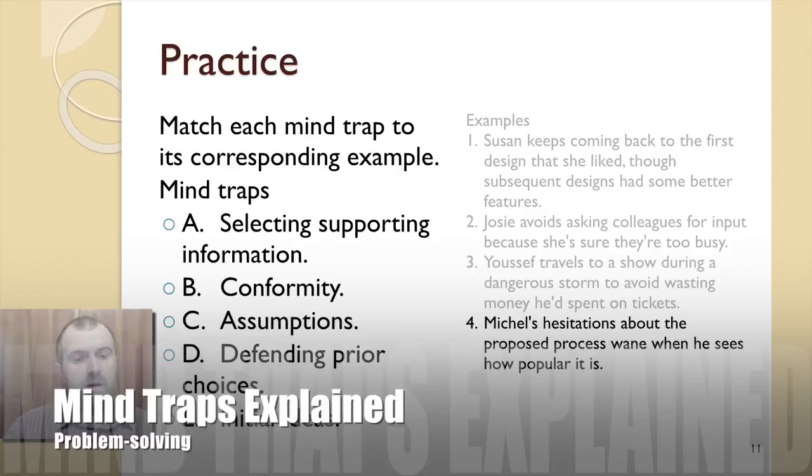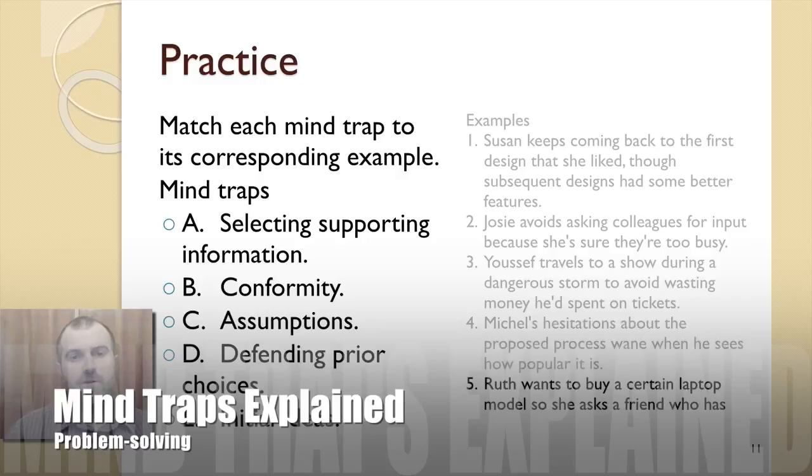And the last one, Roots wants to buy a certain laptop. By asking the friend to tell her only about the laptop's good features, Roots is selectively seeking information that supports her desire to buy one. So these are the matches between the examples we gave and the mind traps we just discussed.